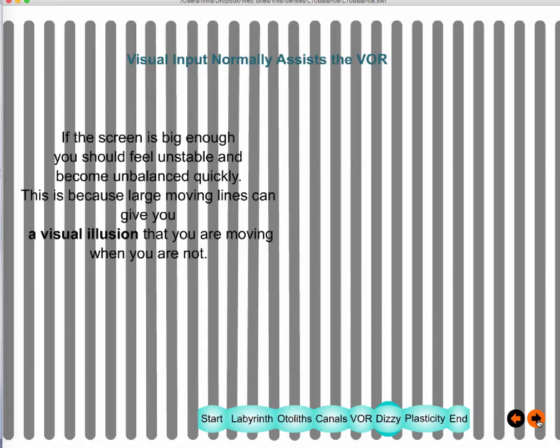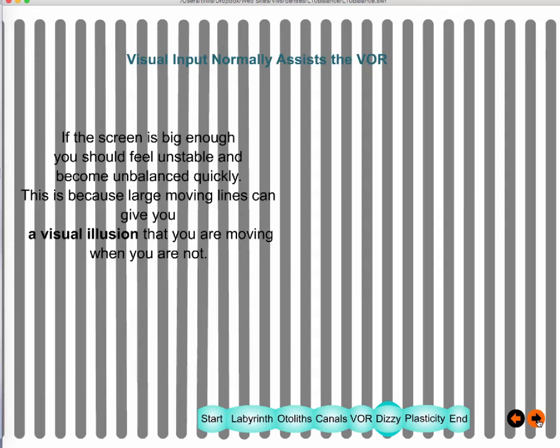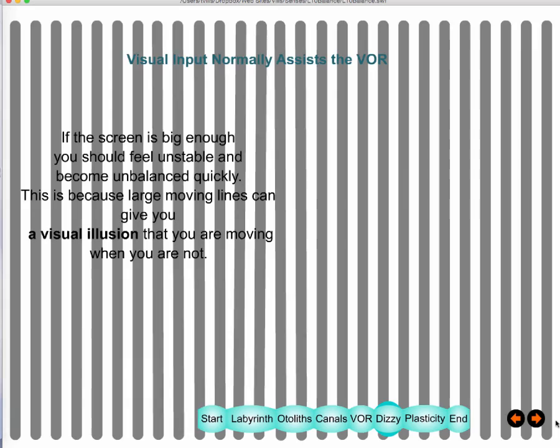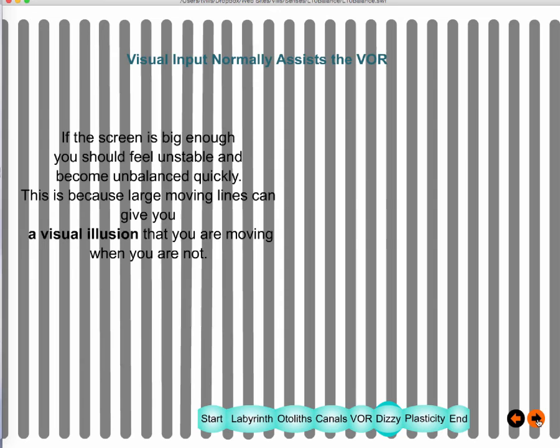If the screen were larger — like sitting in the front row at a cinema — you would feel motion whenever the screen moved, either in the direction of screen movement or the opposite. The larger the visual field stimulation, the more the optic flow influences your sense of motion and balance.